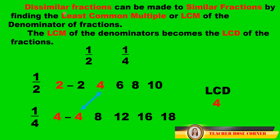Dissimilar fractions can be made into similar fractions by finding the least common multiple, or LCM, of the denominators of the fractions. The LCM of the denominators becomes the LCD of the fractions.